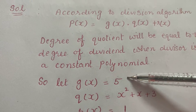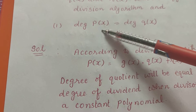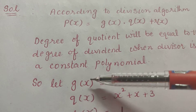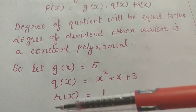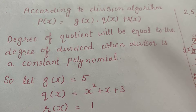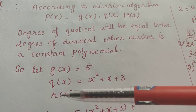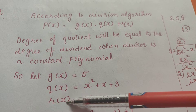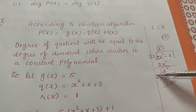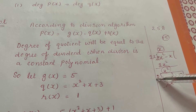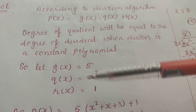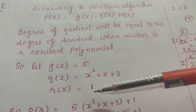To satisfy this condition, we must take g(x) as a constant polynomial. I have taken g(x) = 5. Now for q(x), you can take any polynomial of your choice. For r(x), keep in mind that the degree of the remainder must always be less than the degree of the divisor. Since g(x) is a constant polynomial here, I have taken r(x) = 1 — you can also take zero.